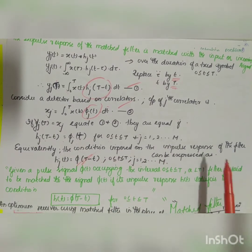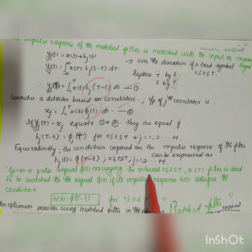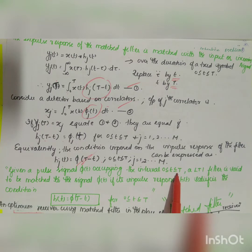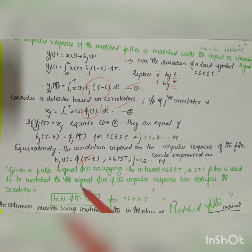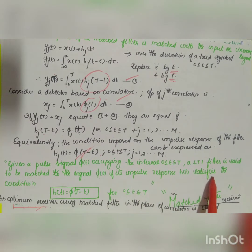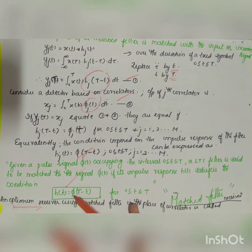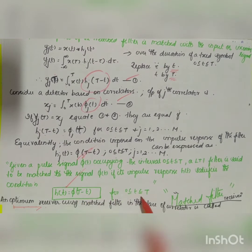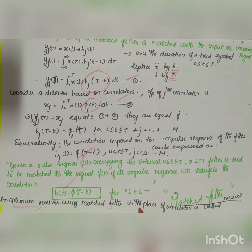Given a signal φ(t) occupying the interval 0 to T, a linear time invariant filter is said to be matched to the signal φ(t) if its impulse response h(t) satisfies the condition: h(t) = φ(T − t) for the symbol duration 0 to T. An optimum receiver using a matched filter in place of a correlator is called a matched filter receiver.